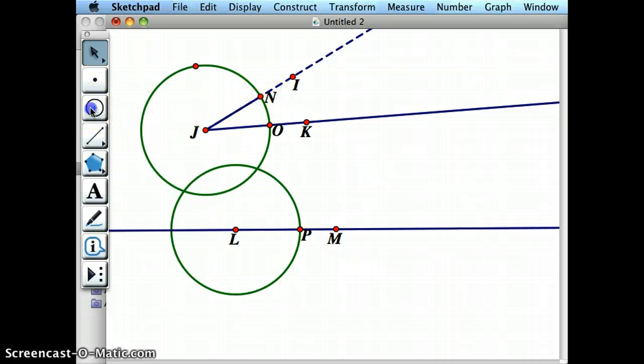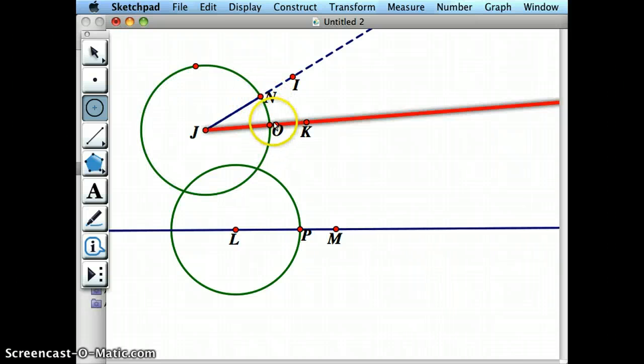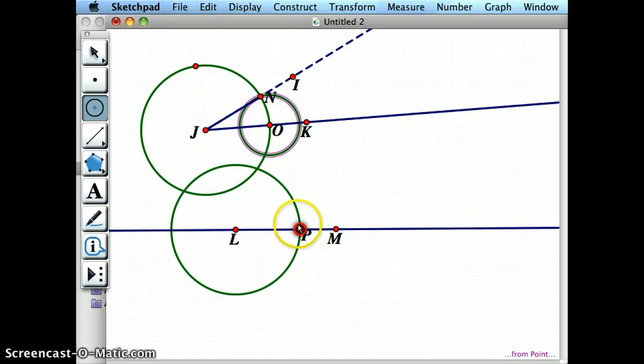Now what I want to do is make a circle that goes from here to here. I want to basically make a circle this long. But again, I can't make a circle the same length from here to here unless I know how far it is from the center to the edge, so I need to know the radius of this small circle now. So again, I need to actually make a segment from O to N.